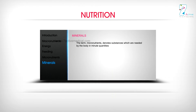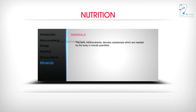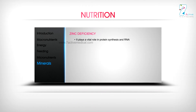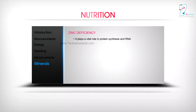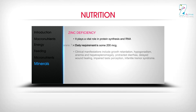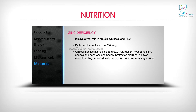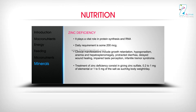Micronutrients are substances needed by the body in minute quantities. Zinc plays a vital role in protein synthesis and RNA; the daily requirement is approximately 200 mcg. Clinical manifestations of zinc deficiency include growth retardation, hypogonadism, anemia, hepatosplenomegaly, protracted diarrhea, delayed wound healing, impaired taste perception, and infantile tremor syndrome. Treatment consists of zinc sulfate: 0.2 to 1 mg of elemental zinc or 1 to 5 mg of the salt per kilogram body weight per day.